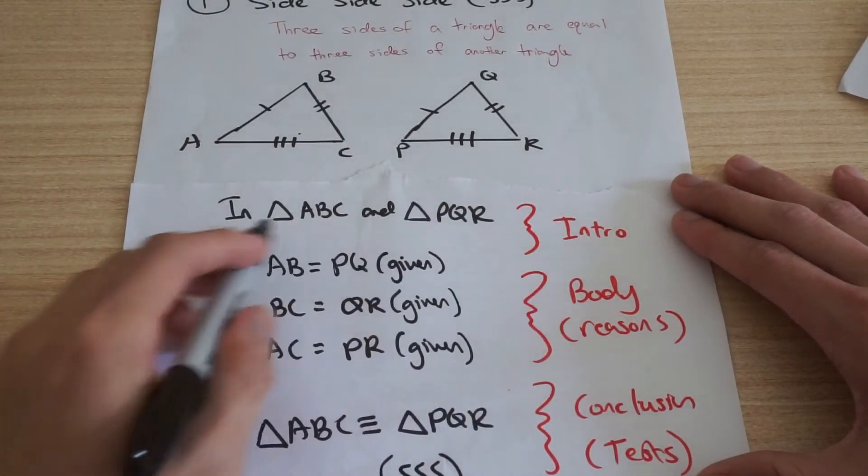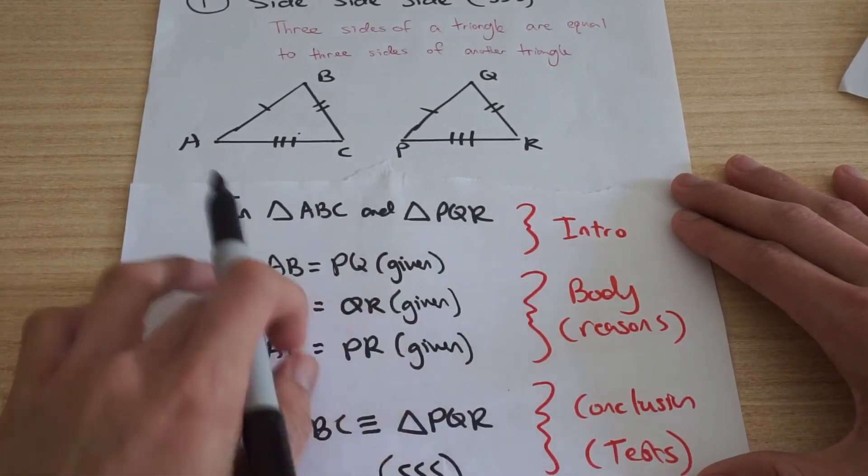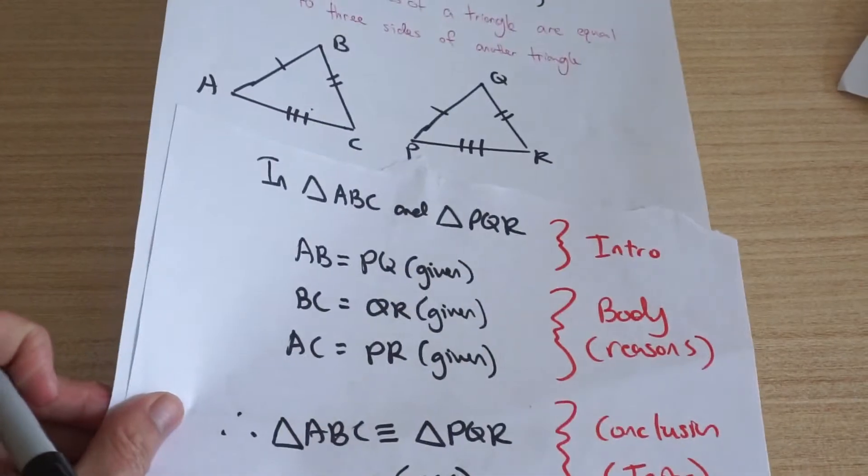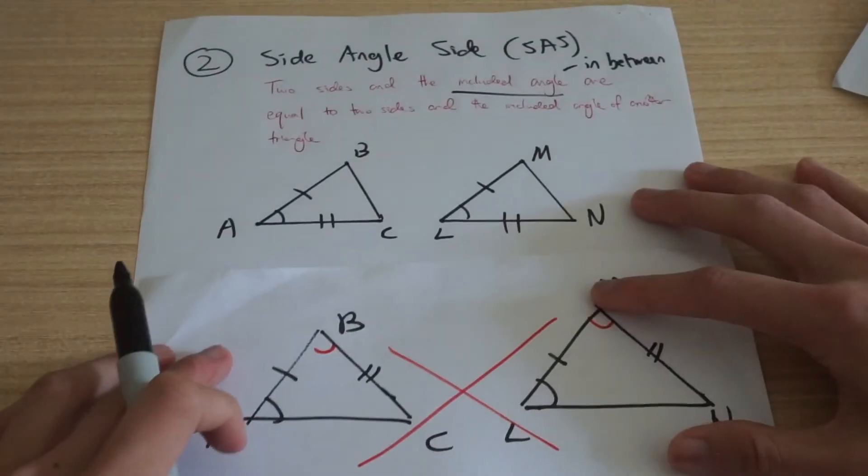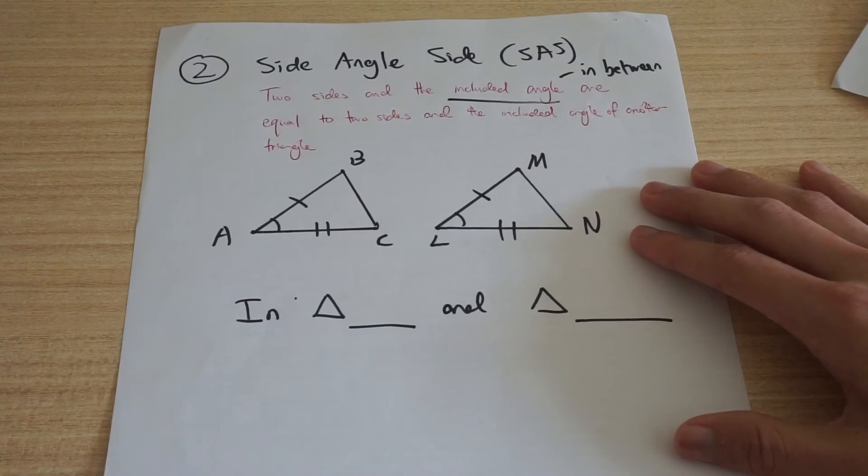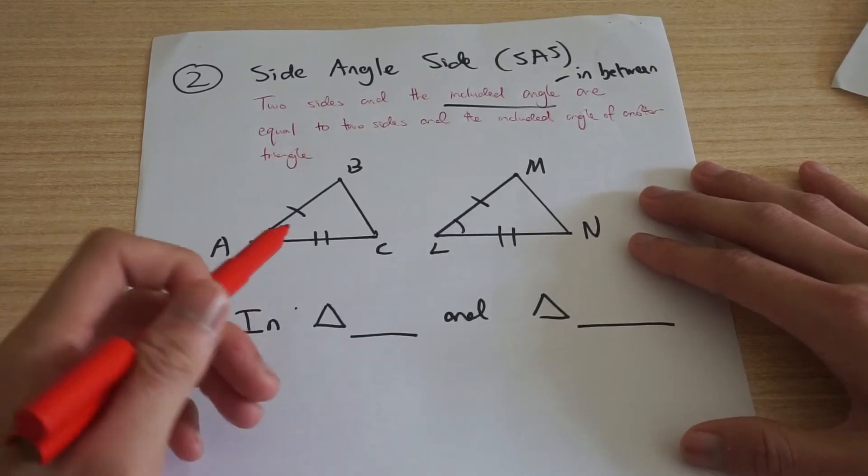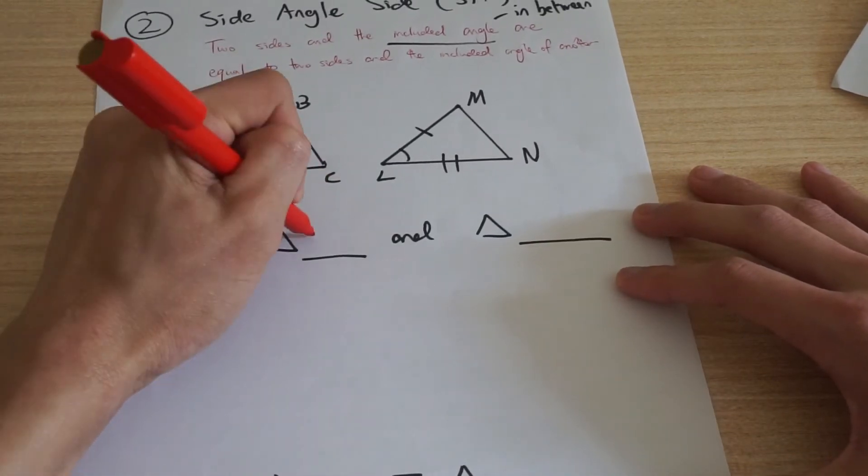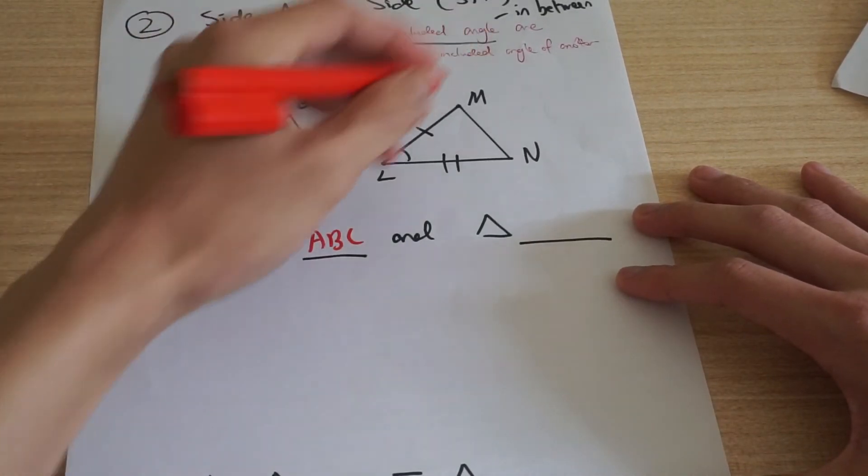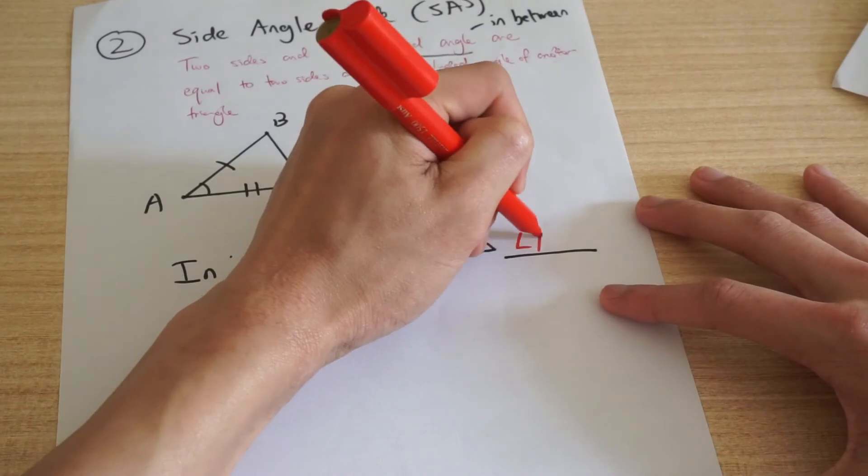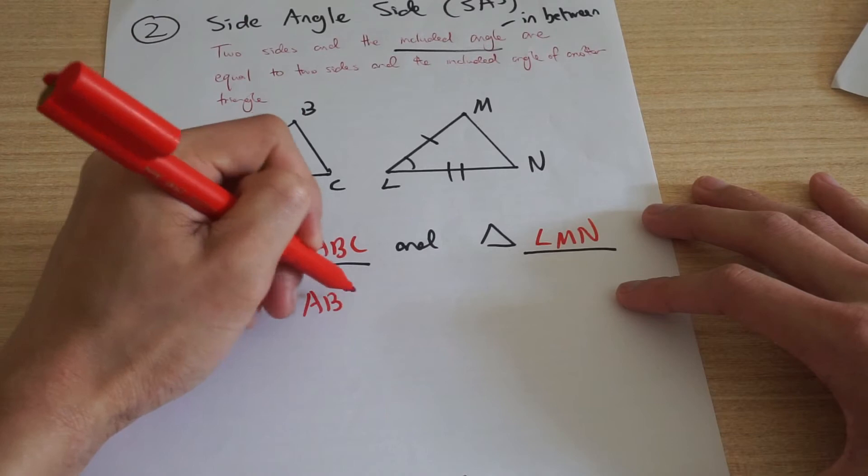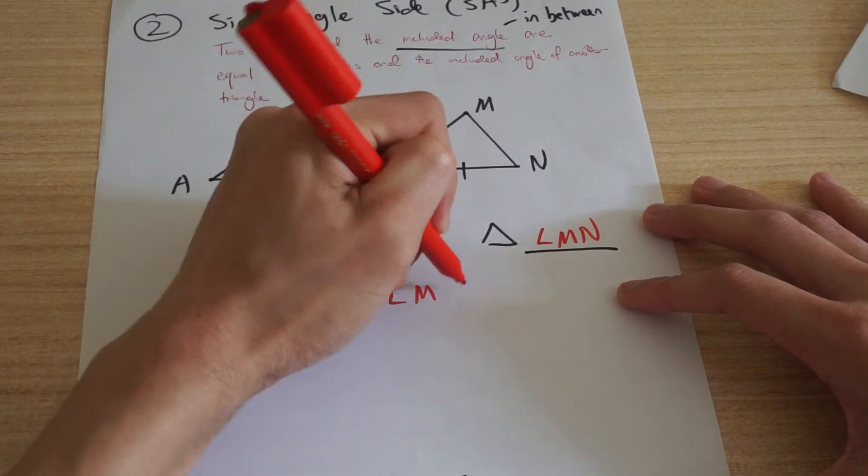You want to have your intro, have your reasons, and then finish off with your tests. Okay, let's have a look at the other three. So side angle side. So I think about, okay, what are my two triangles? It's going to be my intro now. So in triangle ABC and triangle LMN. Alright, what information do I know? Well, I know that AB equals to LM is given.